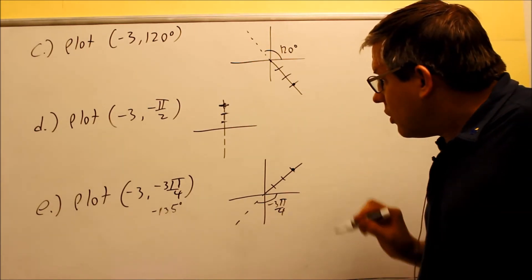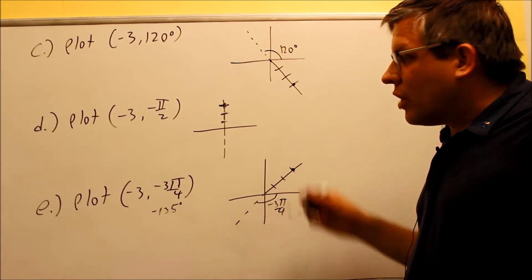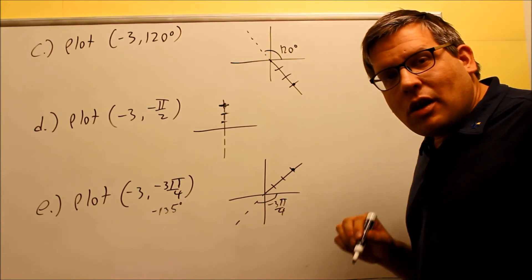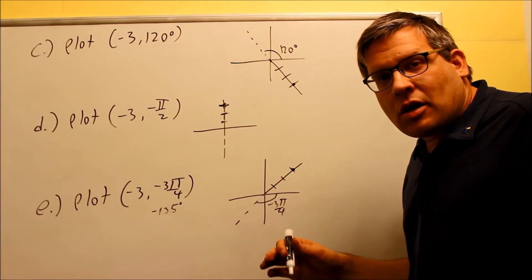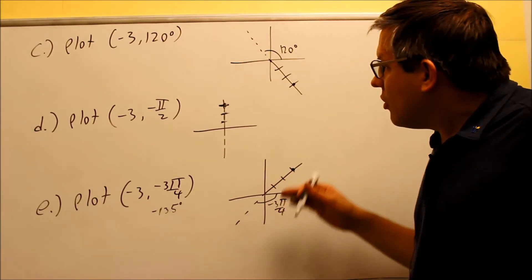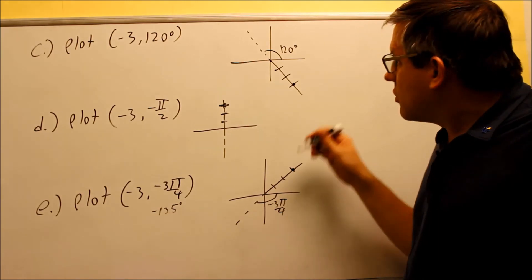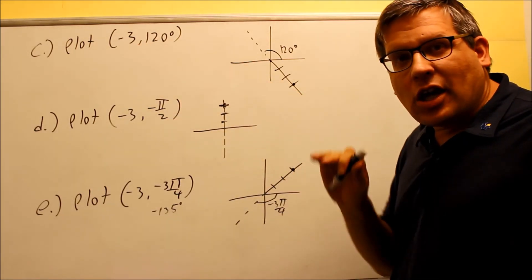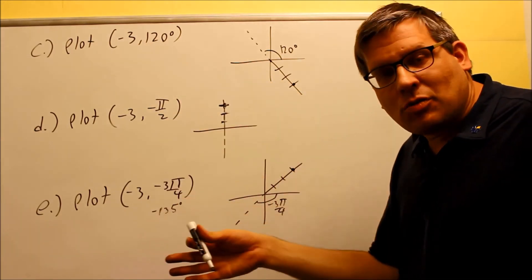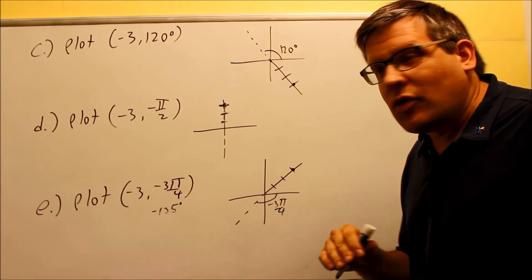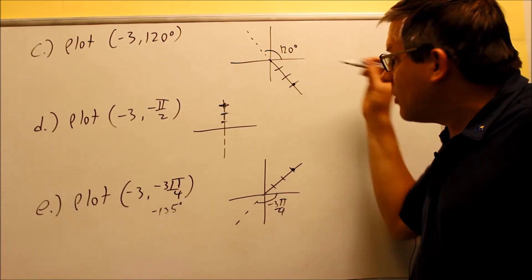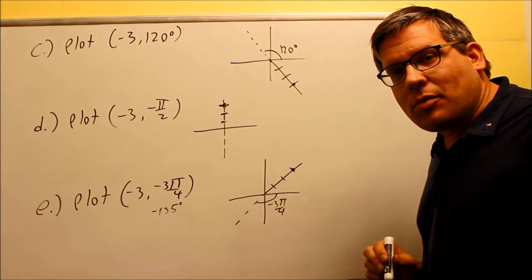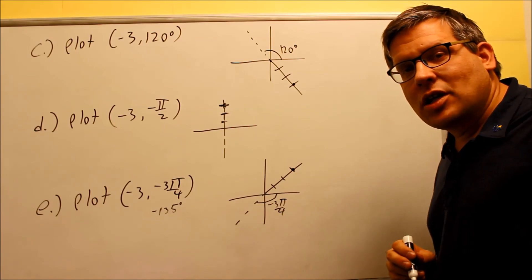So we've done now parts A through E. The next video will talk about how you can have an equivalent point — suppose I didn't want a negative r value and wanted to change it to a positive r value. Could I arrive at the same spot? That's what the next video is going to cover: equivalent polar coordinates.